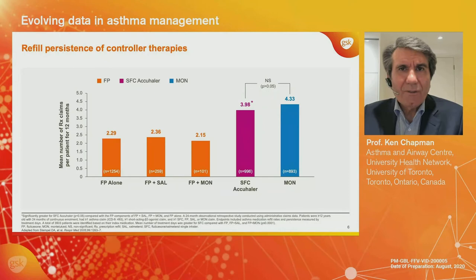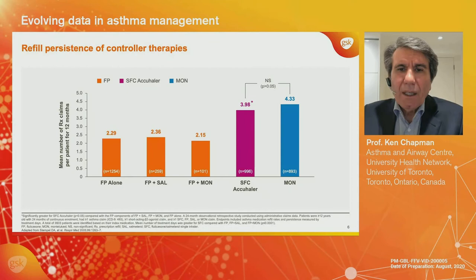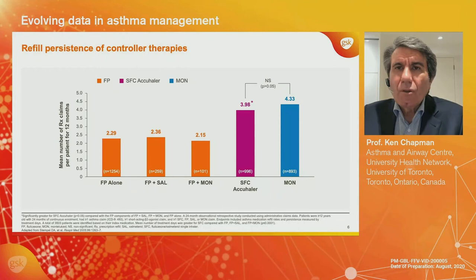If we move to something that's arguably more effective but a bit cumbersome, we could add salmeterol — in a separate inhaler. So we now have a patient juggling two inhalers, but presumably for better efficacy. Yet the prescription refills remain low. If we move to the next example — fluticasone plus montelukast — not terribly effective as an additive, and not surprisingly, not a great increase in prescription refill rate. In fact, not at all.